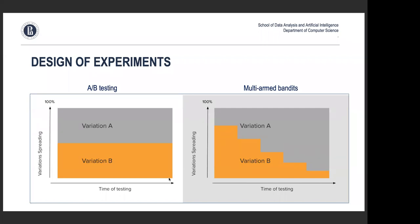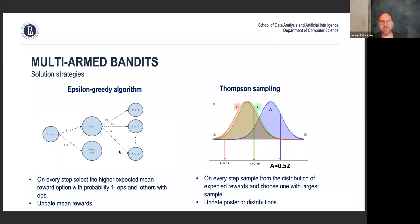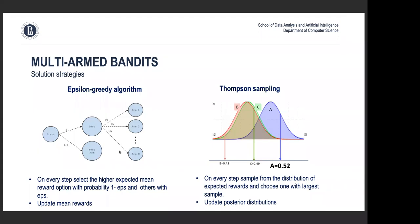A student asks: when using multi-armed bandits with only a control group and a testing group, does epsilon-greedy mean we go with probability one-minus-epsilon to the algorithm and with epsilon to the control group — where control means doing nothing or using human intelligence? And if the algorithm is worse, does it converge to doing nothing? The answer is yes.